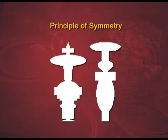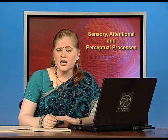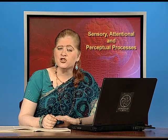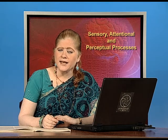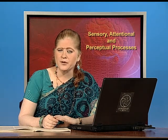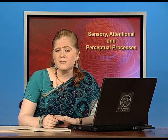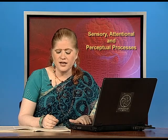Now we come to the principle of symmetry. Objects that are symmetrical are related and perceived together, while the asymmetrical thing is perceived as the background. Here, the color black tends to make a figure, not the color white. Black is a chromatic thing against an achromatic background. Hence, we see symmetry turning into figures.